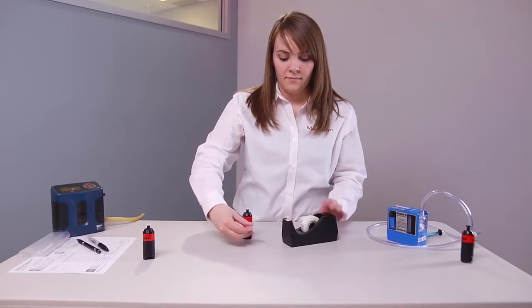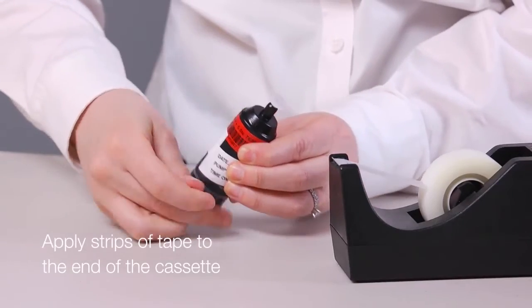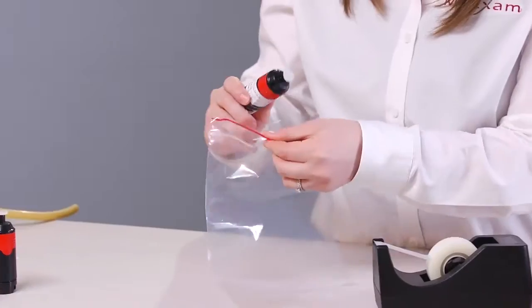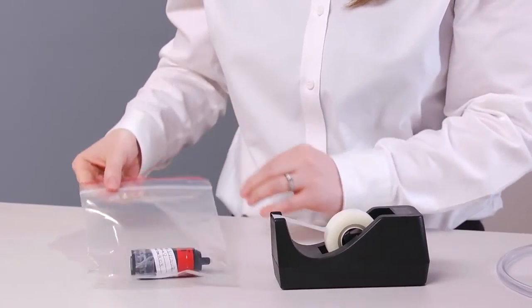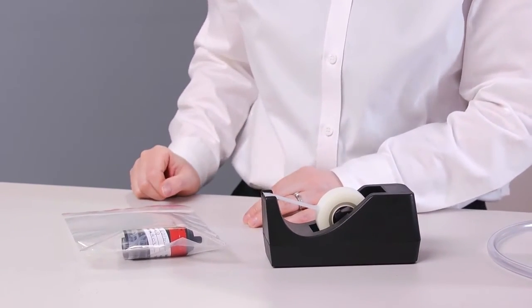If you are concerned about the cassette opening during transport, apply strips of tape to the ends of the cassette. Place the cassette into a sealable plastic bag or bubble wrap envelope and store the samples at ambient temperature until ready to ship.